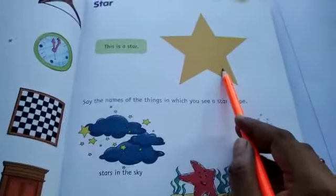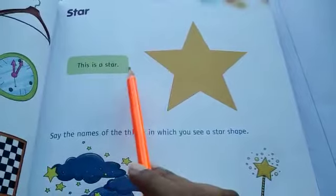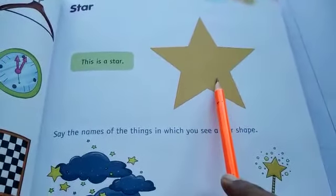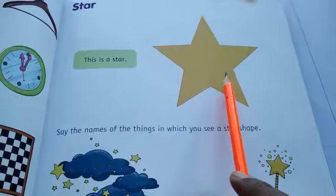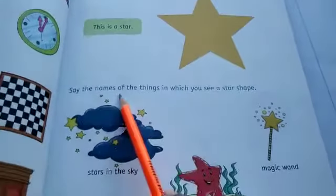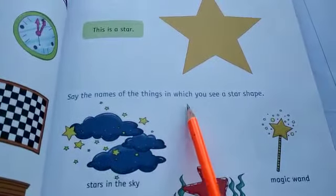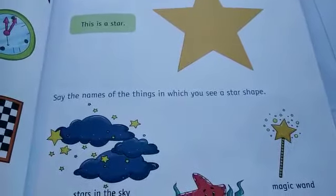This is a shape which is star. This is a star. What is this? Yes, this is a star. Say the names of the things in which you see a star shape.